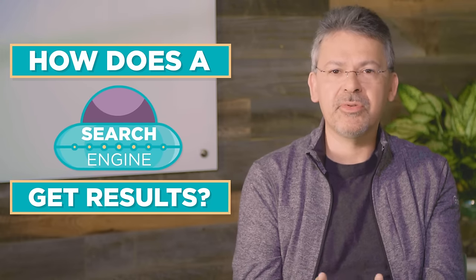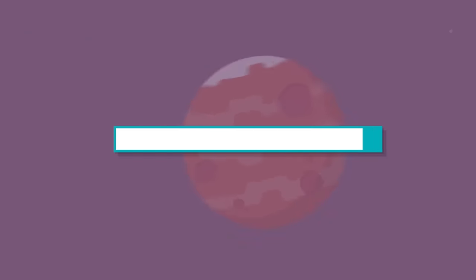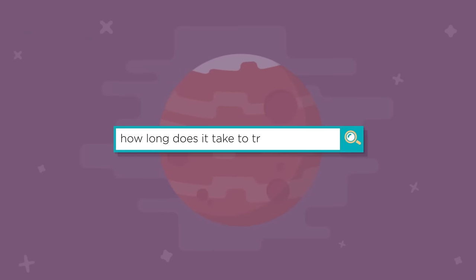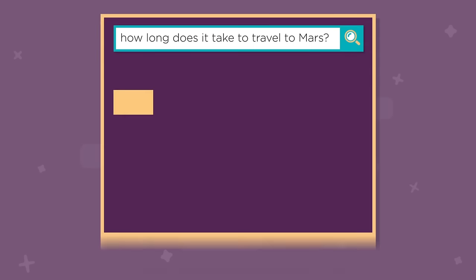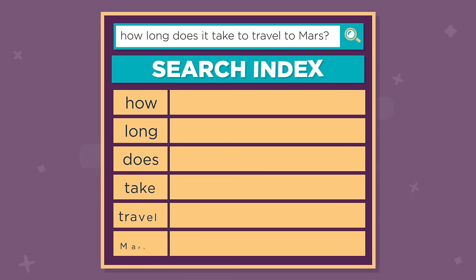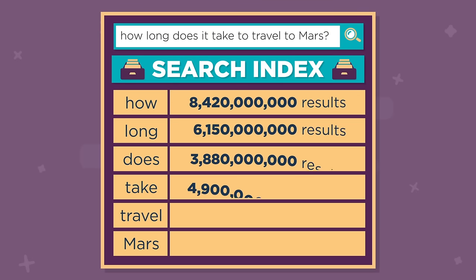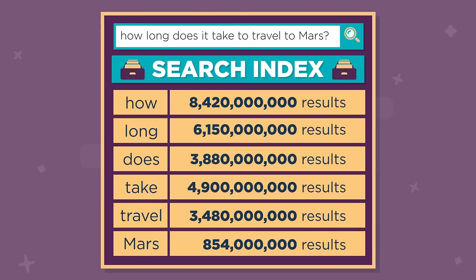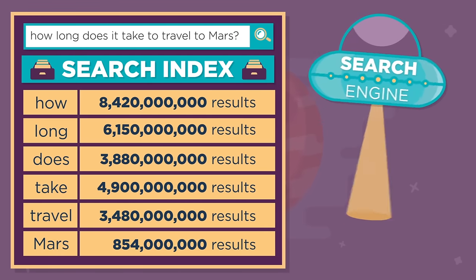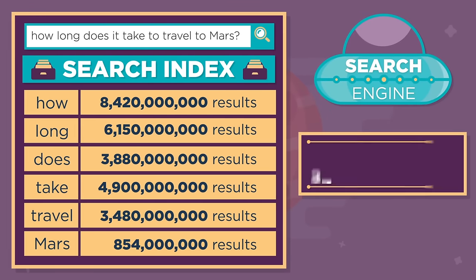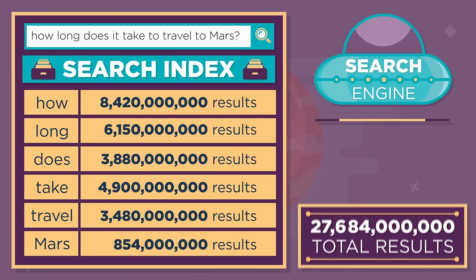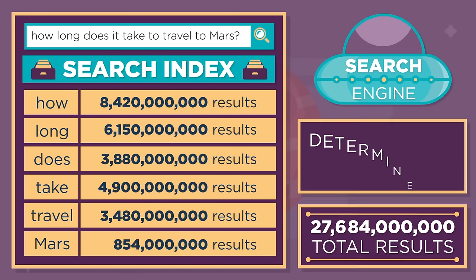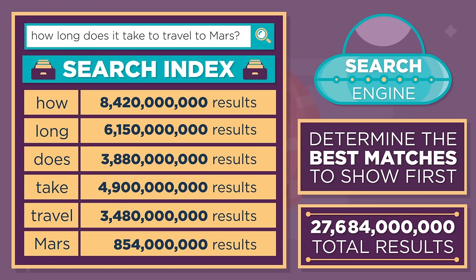Now, let's go back to that search from earlier and see if we can figure out how the search engine came up with the results. When you ask how long does it take to travel to Mars, the search engine looks up each of those words in the search index to immediately get a list of all the pages on the internet containing those words. But just looking for these search terms could return millions of pages, so the search engine needs to be able to determine the best matches to show you first.